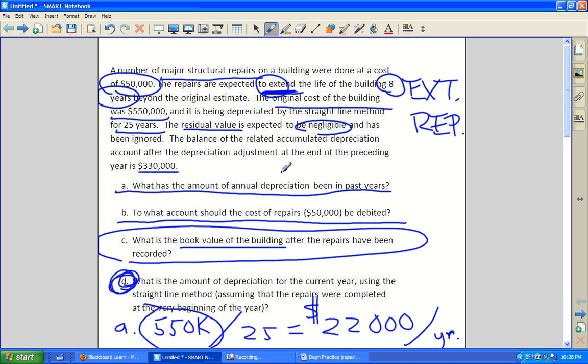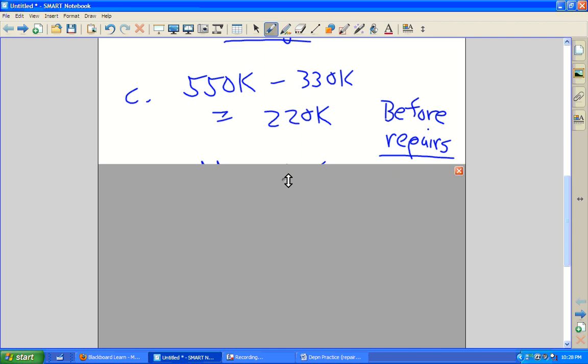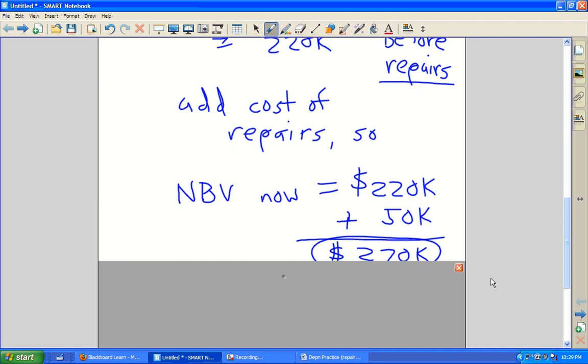So if you know what $330,000 is and you know that our annual depreciation expense has been $22,000, you can figure out exactly how many years of depreciation that represents. So it looks a little something like this. First of all, they say, what's the net book value? Well, $550,000 minus $330,000 equals $220,000 before repairs. Add the cost of the repairs. So you take that plus $50,000 and we get $270,000. You're going to need that. You're going to need the $270,000 as the net book value that is still left to be depreciated.